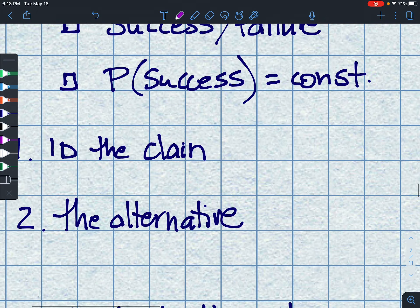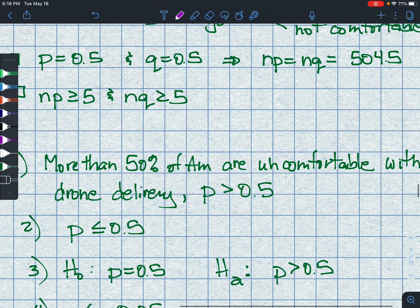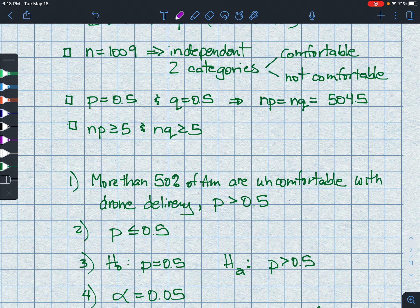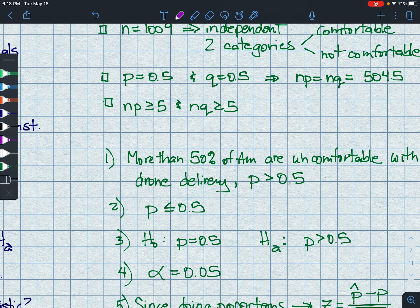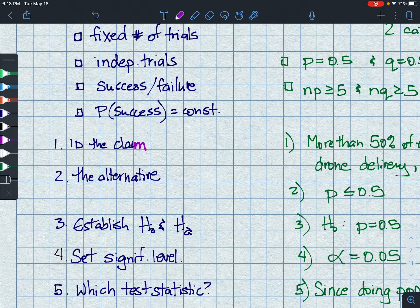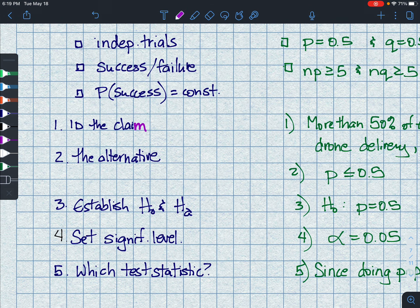So the first thing we do is we ID the claim. Not the claim, the claim. So more than 50% of Americans are uncomfortable with robots delivering. So p is greater than 0.5. So our alternative then, number two, is p is less than or equal to 0.5. We then establish what are the null and the alternate hypothesis. So again, the null hypothesis is p equals 0.5. And the alternative then would be our original claim, which is p is greater than 0.5. Our significance level is 0.05. That's our alpha. This is where we are kind of uncertain because it's so far out there. We can't attribute that to just chance. Something else must have caused that.